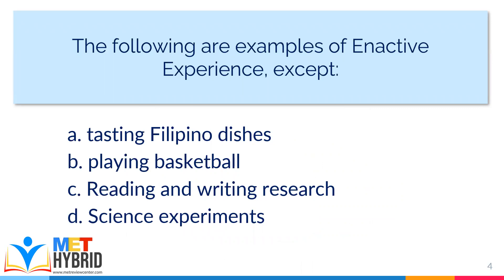Next question: the following are examples of an active experience except. The answer is letter C, reading and writing research. In the threefold analysis proposed by Jerome Bruner, he reorganized Dale's cone of experience into three experiences: the enactive experience, which refers to direct experiences such as direct purposeful experience, contrived experience, and dramatized experience; the iconic experience, which pertains to pictorial experiences such as demonstrations, field trips, exhibits, and motion pictures; and the symbolic experience, which refers to highly abstract experiences such as visual and verbal symbols. Since doing research involves reading and writing, it falls under symbolic experience.